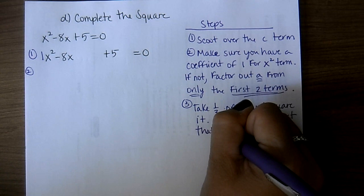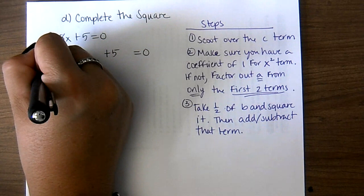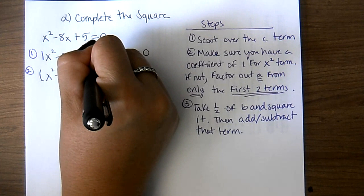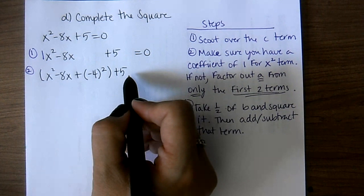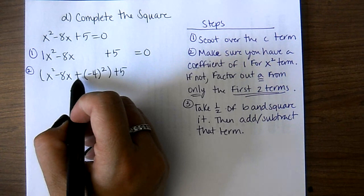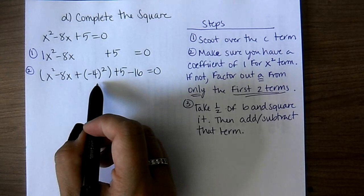Half of negative 8 is negative 4. So I take x squared minus 8x and add negative 4 squared. I want to keep this balanced, so whatever I add on the inside I do the opposite on the outside. Half of b is negative 4 squared, which gives plus 16 inside. If I'm adding 16 inside, I have to subtract 16 on the outside to keep the equation balanced — it's really adding zero, just changing the look.